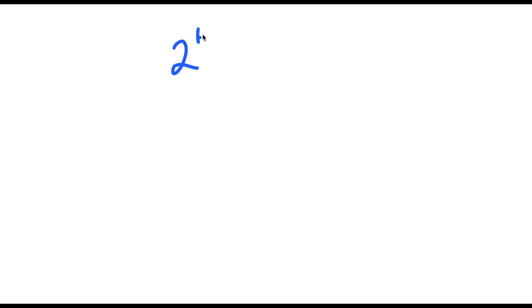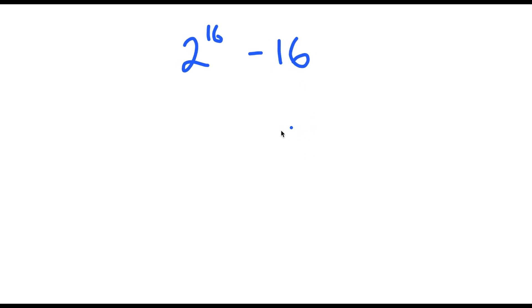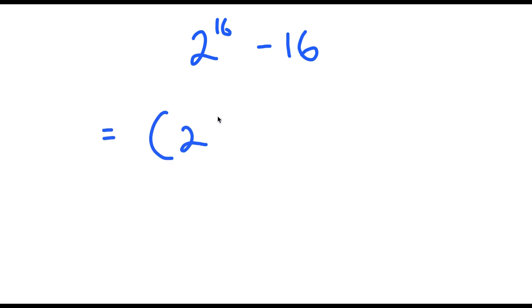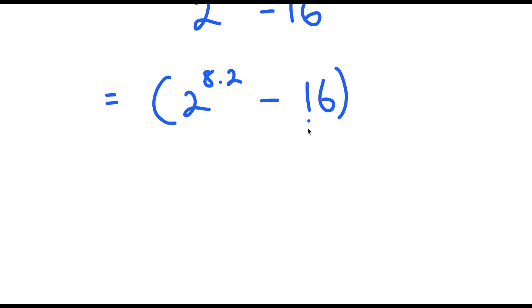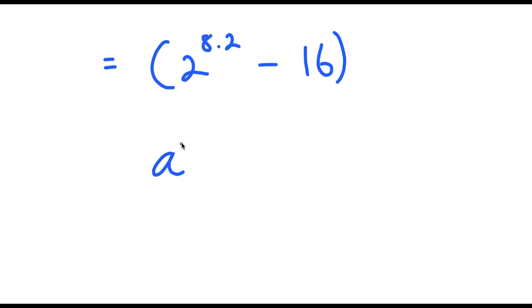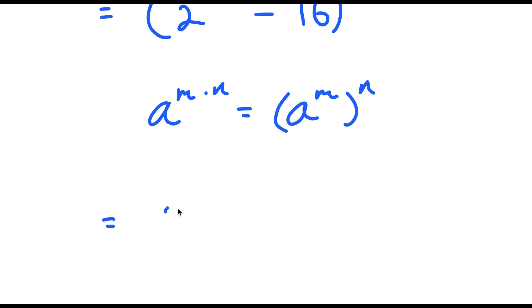In this video, I'm going to be solving the problem 2 to the power of 16 minus 16. I'm going to first start by rewriting this as 2 to the power of 8 times 2 minus 16. If I have something in the form a to the power of m times n, this is equal to a to the power of m to the power of n. So this turns into 2 to the power of 8 to the power of 2 minus 16, which is 4 squared.